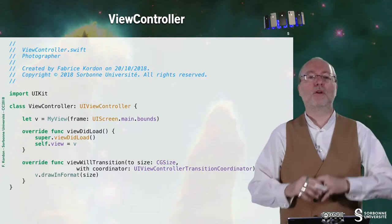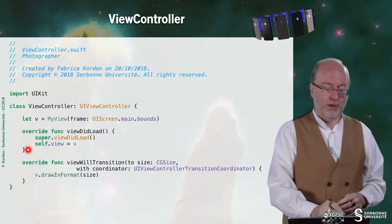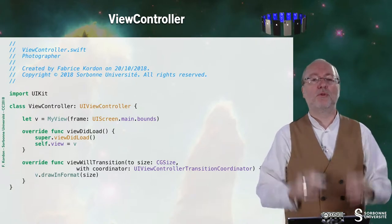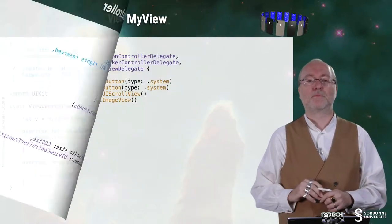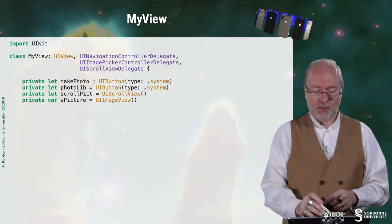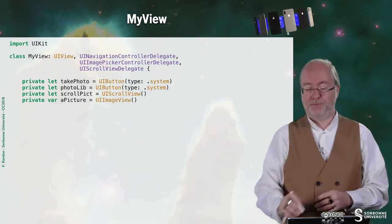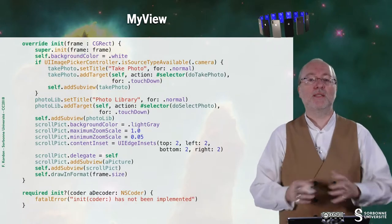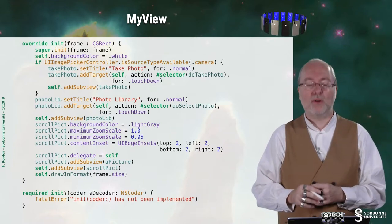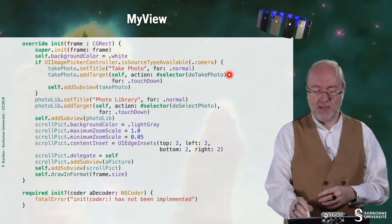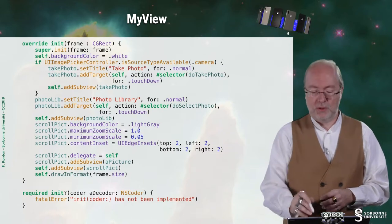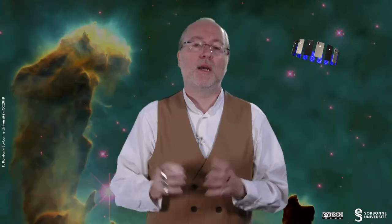Let's have a look at the view controller. The view controller is very simple, very basic, as usual. You just have to create the view and handle the change of size. My view is a bit more complex — here I have two buttons to take a photo or to access the library. I have a scroll view and I have an image view. I will associate the first action to a method called doTakePhoto and the second button to a method called doSelectPhoto. The first one goes to the camera, the second one goes to the photo library.